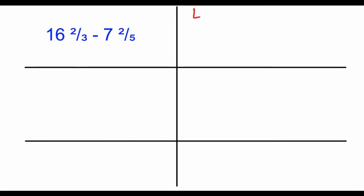So we're going to start in this box by finding the least common denominator of 3 and 5. So if we list those out, we are going to quickly see that the least common denominator is 15.